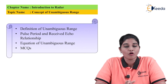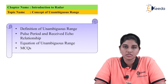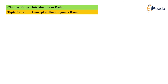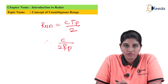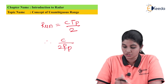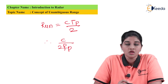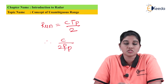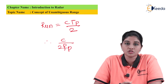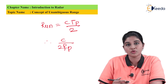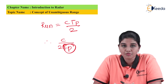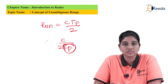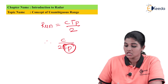Now let's consider the formula for pulse repetition frequency and pulse repetition time. The maximum unambiguous range provided by the radar system is given by: R_u = c · Tp / 2, where c is the speed of light (propagation speed) and Tp is the time duration between two pulses. We can rewrite this in terms of pulse repetition frequency fp as: R_u = c / (2·fp), since frequency is the reciprocal of time period.